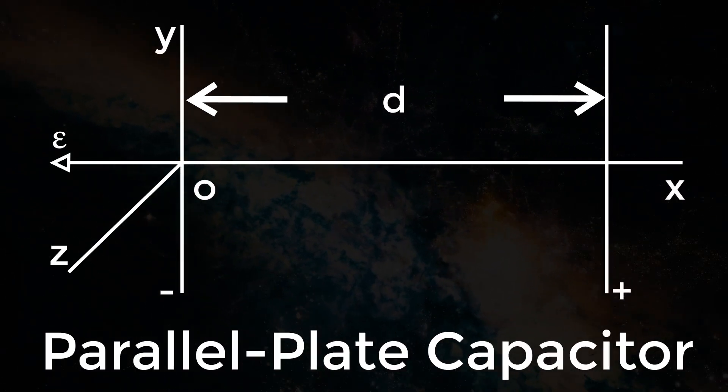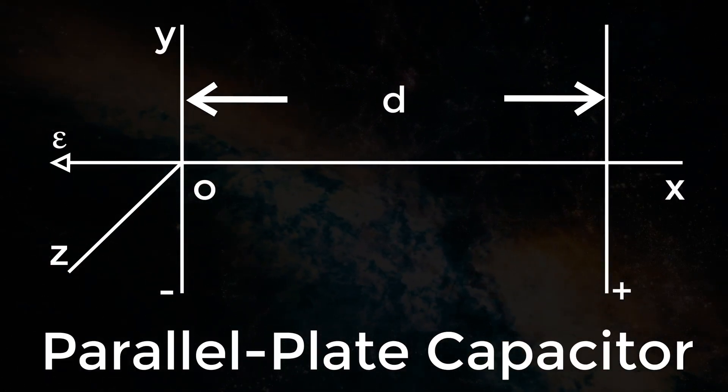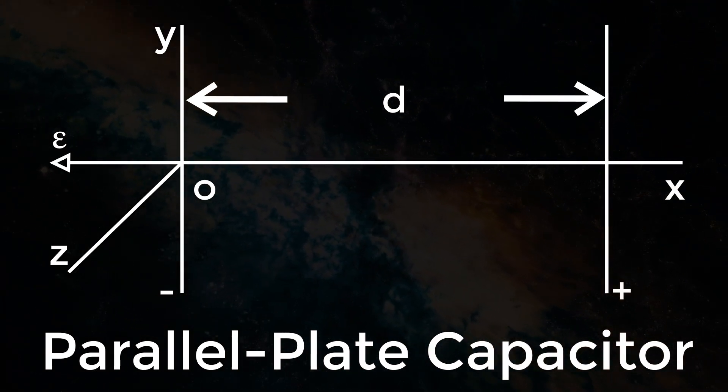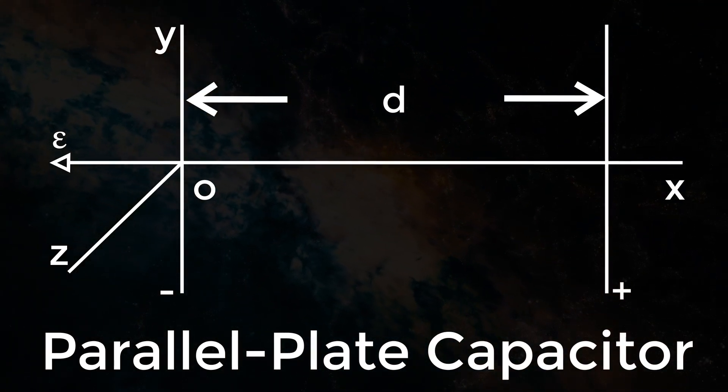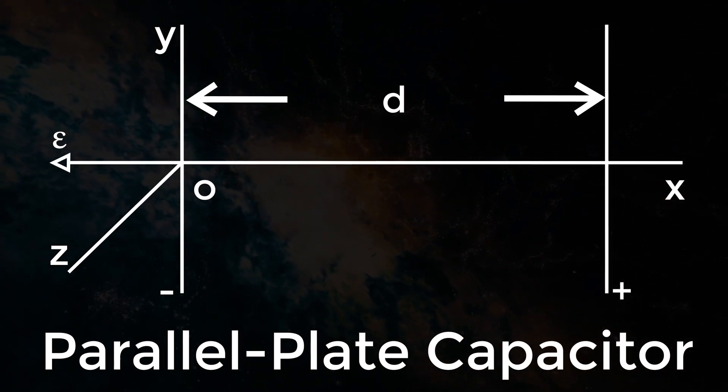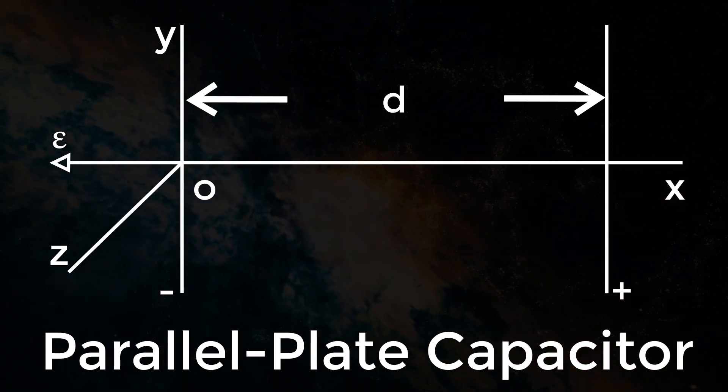Consider a parallel plate capacitor as shown in the figure. When the distance between the plates is much smaller compared to the area of the plates, the field between the plates can be assumed to be uniform with lines of force pointing in the negative x direction.